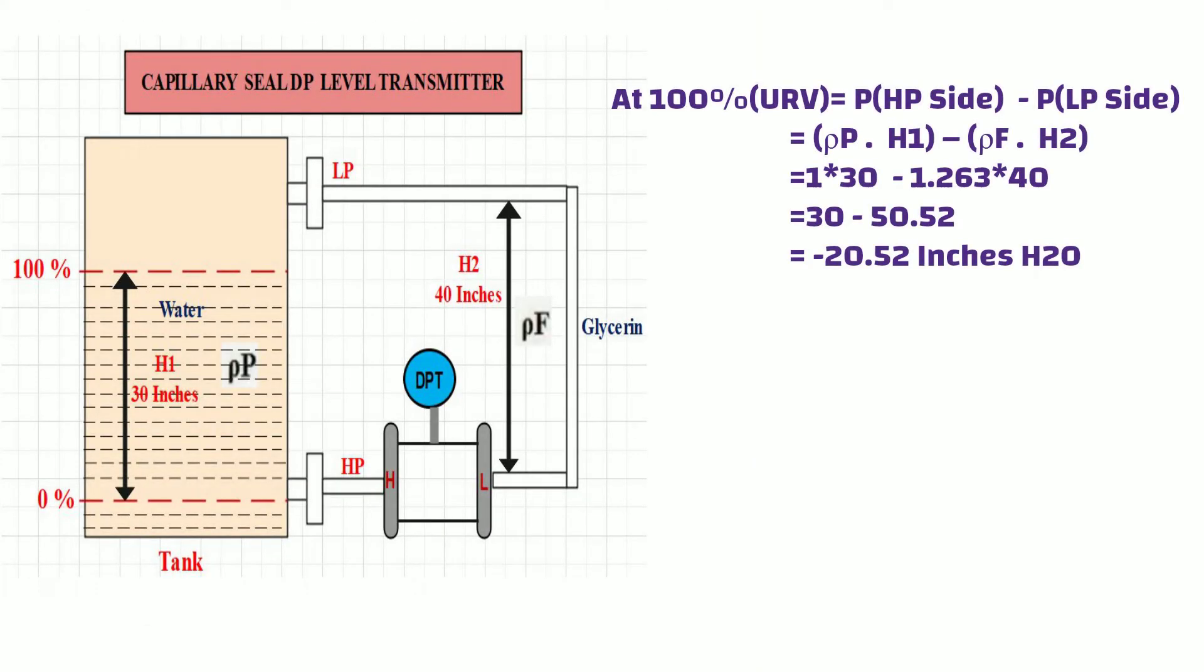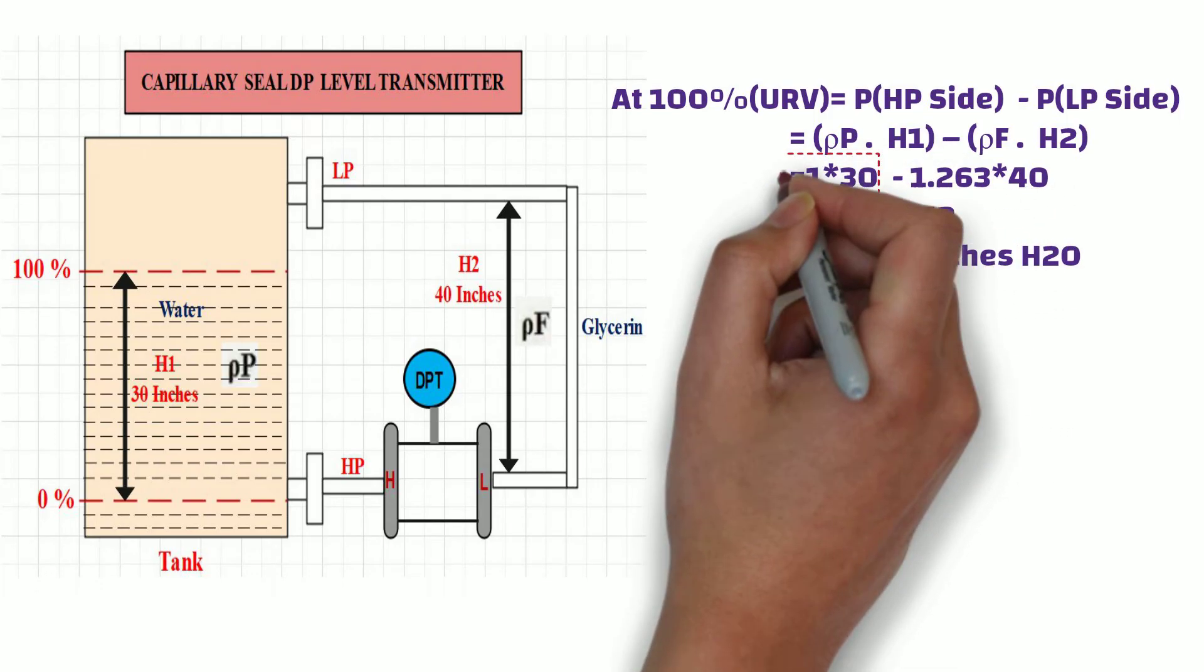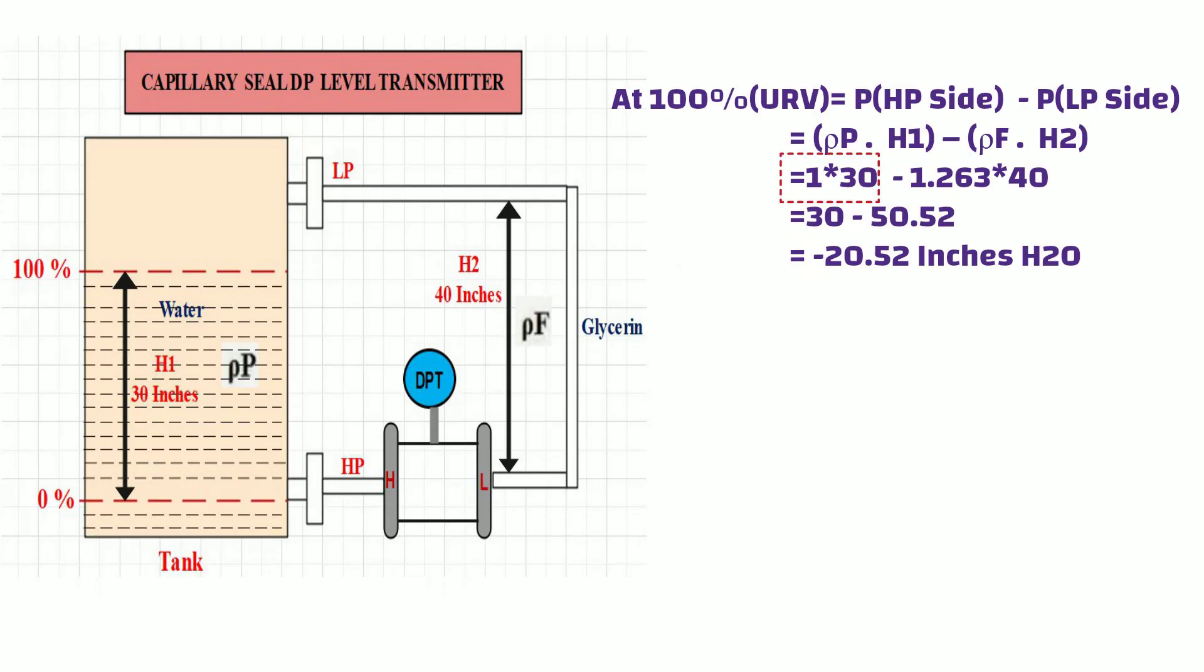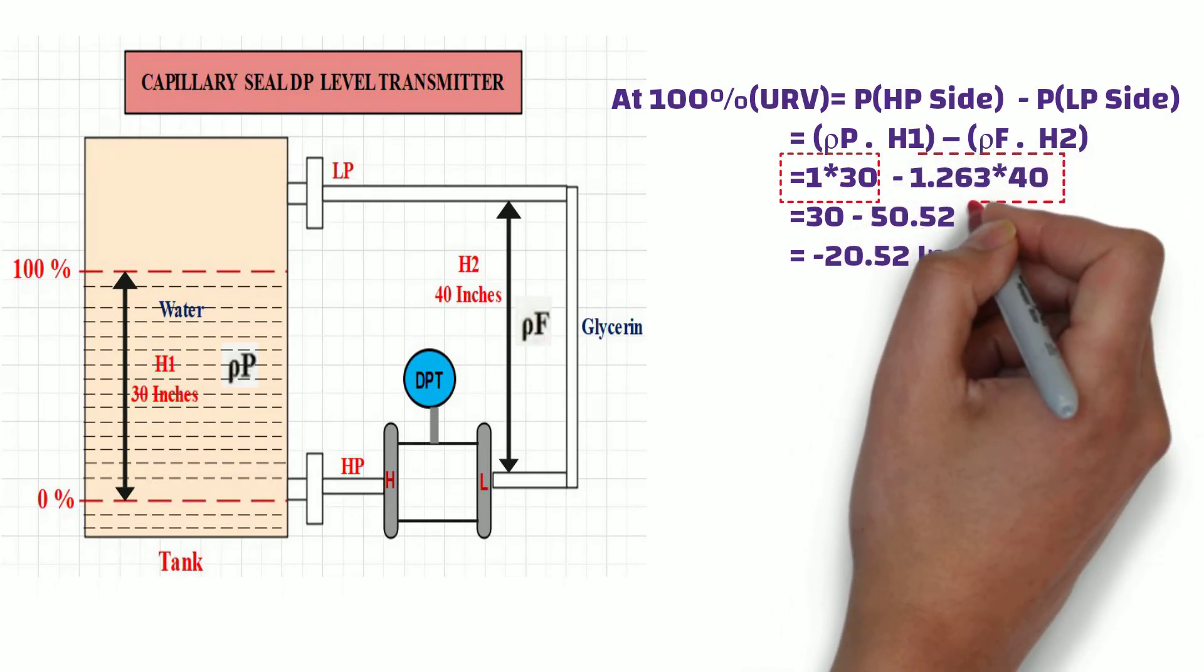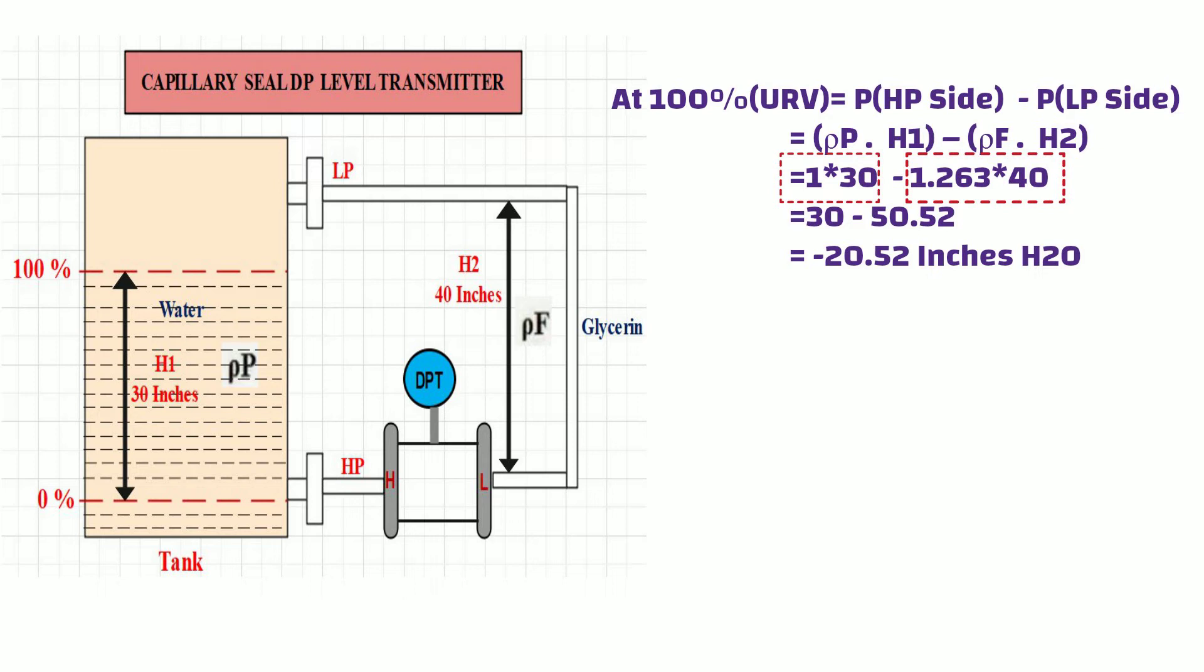Similarly, at 100% level or at maximum level, the DP transmitter's high port side has 30 inches H2O pressure, which multiplies with the specific gravity of water, which gives 30 inches H2O. At the same time, the DP transmitter low side has 40 inches H2O pressure, which multiplies with the specific gravity of glycerin, which gives 50.52 inches H2O pressure. So the differential pressure is minus 20.52 inches H2O at 100% level. And this is our upper range value in this example.